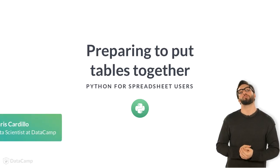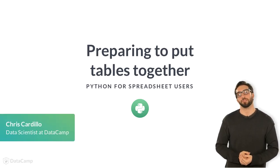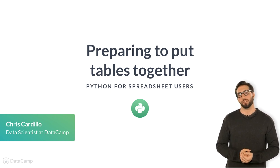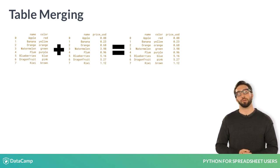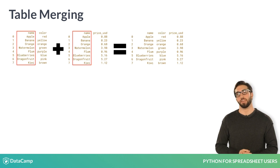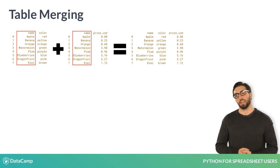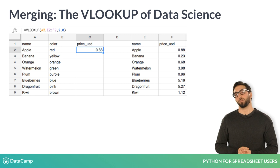Now that we have multiple related tables, the next logical step would be to piece them together. Merging tables, which we will explicitly cover in the next lesson, involves taking two tables with common fields — here our name columns — and merging them together to create a more holistic dataset. The closest spreadsheet comparison to a table merge, or join as it's often called, is a VLOOKUP.